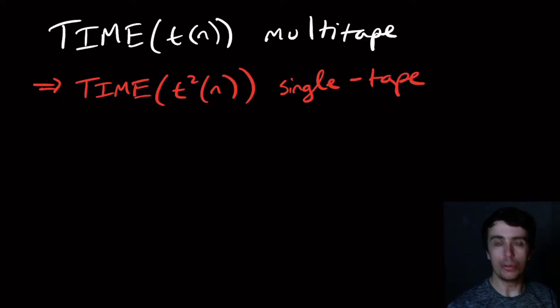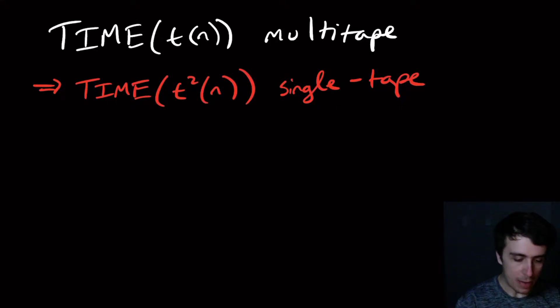Today we'll be doing a quick proof that shows that if you have a multi-tape Turing machine that runs in t of n time, then we can convert it into a single tape one that is the square of that time.